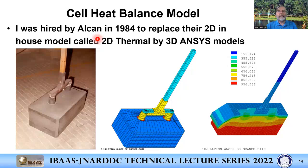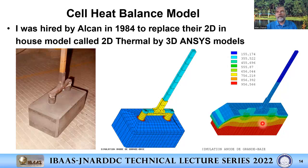Alcan followed a different path — they developed 2D models in the 1960s and 70s, but asked me in the 1980s, when I joined Alcan in 1984 after my PhD, to use ANSYS commercial code to develop a 3D model of an anode. It's an Alcoa P155 anode with copper rod. That's the mesh, and the solution took two weeks of computing time — because in 1984 this kind of model was at the limit of what you could solve. Now the same model solves on any computer in less than 30 seconds.